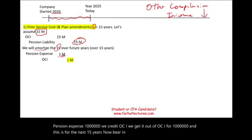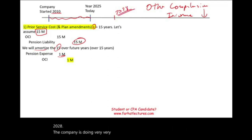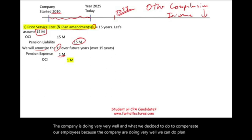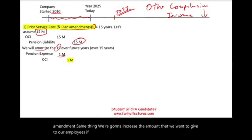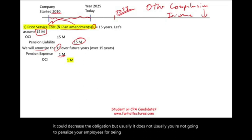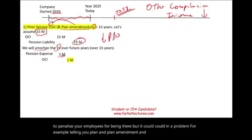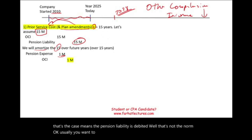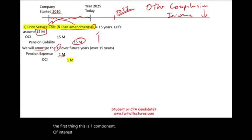Let's assume in 2028 the company is doing very well and decides to compensate employees more through a plan amendment — increasing the amount given to employees. This is treated the same way as prior service cost. We first let it sit in OCI, then amortize it. Plan amendments can also decrease the obligation, though that is not the norm. Any plan amendment is treated the same as prior service cost, and this component increases pension expense.